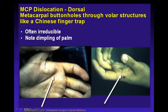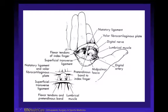There are some dislocations that cannot be reduced. This is a volar dislocation of the metacarpophalangeal joint where the metacarpal head buttonholes through the volar structures. The harder we pull on the index finger, the more the finger-trap effect causes reduction to fail. Note the dimpling of the palm — this can indicate vascular involvement with significant swelling. So if you don't get it the first time, don't keep tugging. Get them to an x-ray facility, as this dislocation often needs to be done open. The structures causing the finger trap are the natatory ligament, volar plate, superficial transverse ligament, lumbricals, and flexor tendons.